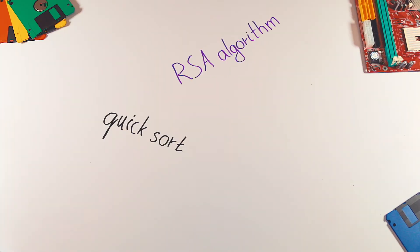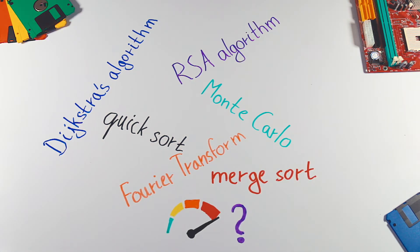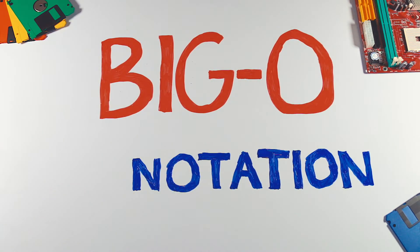When we talk about algorithms, we are interested in their performance. But instead of expressing an algorithm's performance in seconds or minutes, we use Big O notation.